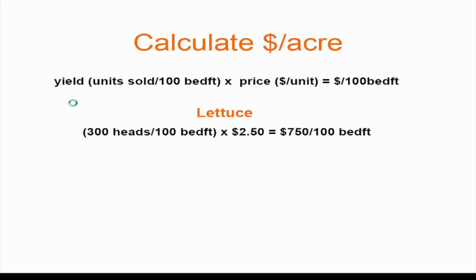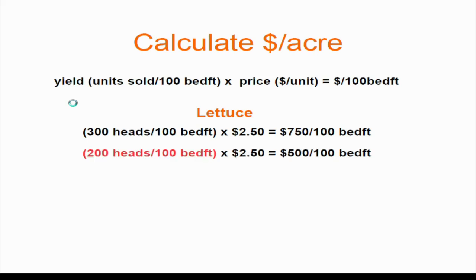Let's say you have three rows of lettuce with one-foot in-row spacing — you can harvest 300 heads off a 100-bed-foot planting. At $2.50 a head, that's $750 — which corresponds to $60,000 an acre. But maybe you only manage to harvest and sell 200 heads due to groundhogs, disease pressure, or bolting. At the same price, you're down to $500 for that 100-foot bed, which is $40,000 an acre. Price is another variable — raising it will make more off the same yield.